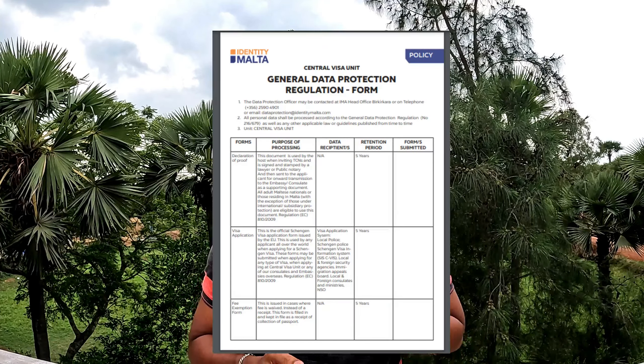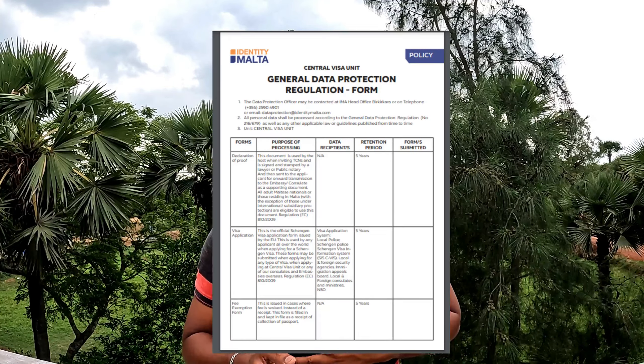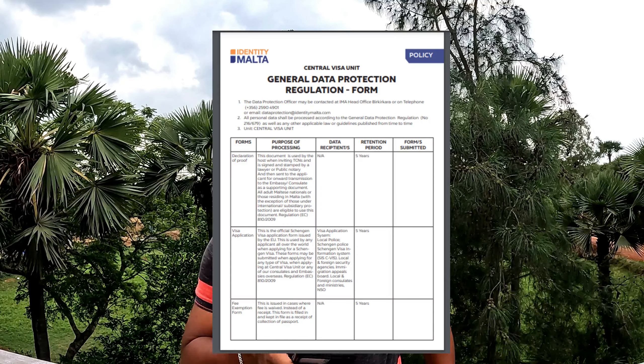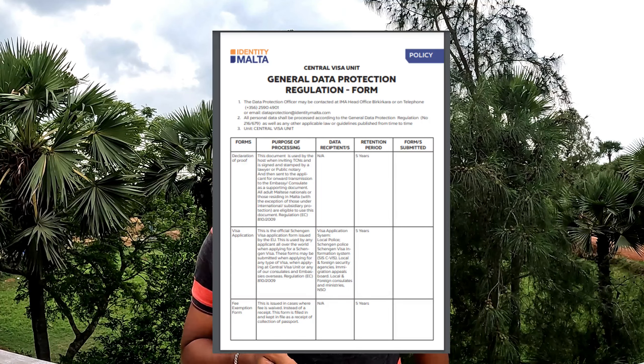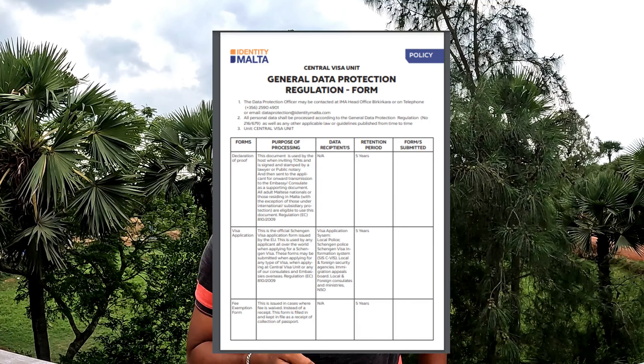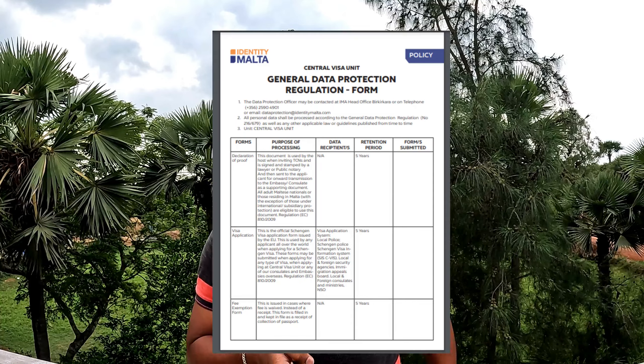Next is the GDPR form. You can download it from the Malta identity website. You can check the details there — the employer will not have it. You can find the date and your employer's ID numbers in the same fields.